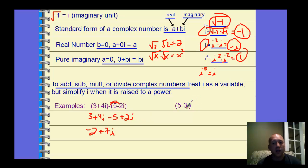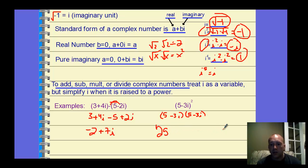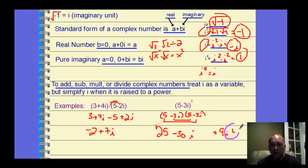For 5 minus 3i squared, we've got to be careful. If you struggle with this as a FOIL problem, expand it first. We get 25 as the first term, and the last term will be 9i squared. The OI terms are negative 15 and negative 15, giving negative 30i. The only new thing for simplifying is that i squared equals negative 1. So 9i squared is really negative 9. We have negative 9 and 25, and negative 30i, which gives us 16 minus 30i.